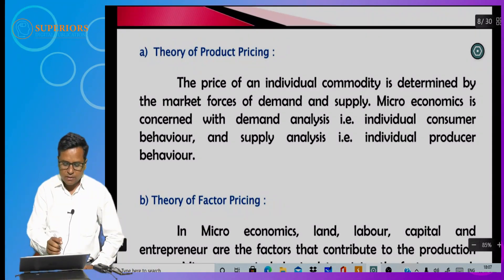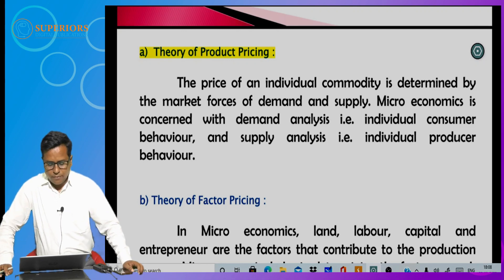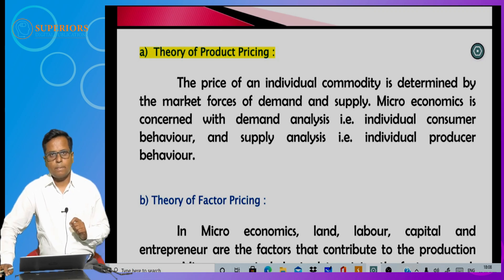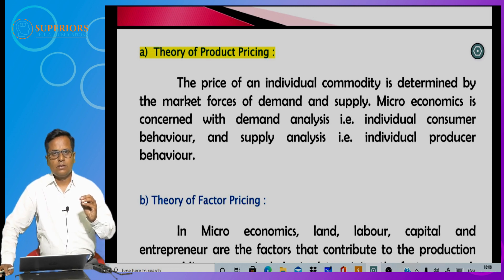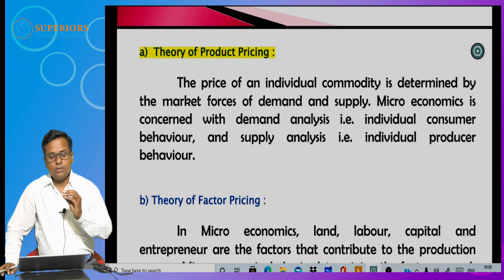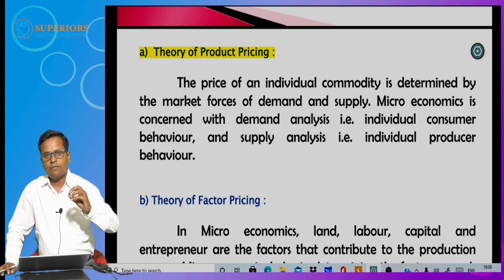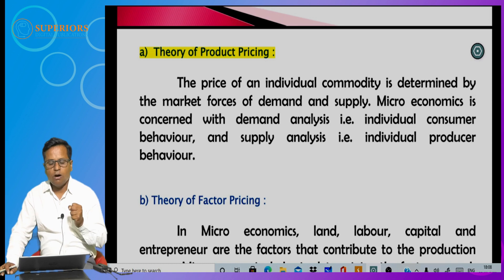The subject matter of microeconomics includes the theory of product pricing, which analyzes how the prices of individual commodities — such as mobile phones, laptops, notebooks, pens, bags, television sets, onions, tomatoes, and various fruits — are determined in the market. The prices of any goods and services are determined by market forces, which are demand and supply.